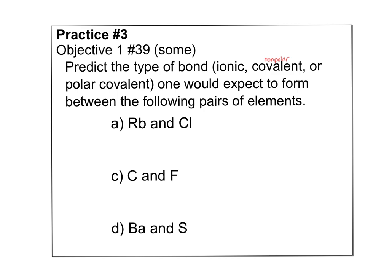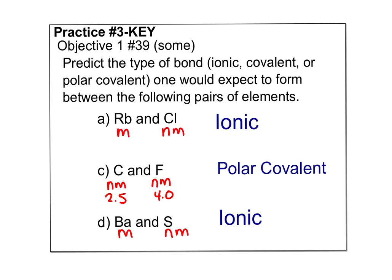Same thing, objective 1 number 39, or sum of number 39. You're going to look at these two elements in each pair and decide, based off electronegativities, if they're ionic, nonpolar covalent, or polar covalent. I would also look at the types. Are they nonmetals, metals, things like that. For this first one, I did not have to look at electronegativities because rubidium is a metal, it's under the metalloid staircase. Chlorine is a nonmetal, it's above the metalloid staircase on my periodic table. And when I have a metal with a nonmetal, we are going to be ionic.